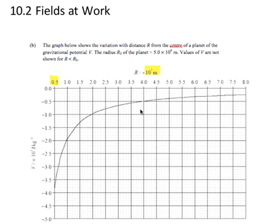Values of V are not shown for values of radius less than the radius of the planet because the graph changes shape there. It doesn't follow the patterns that we're familiar with once you enter the surface of the planet.